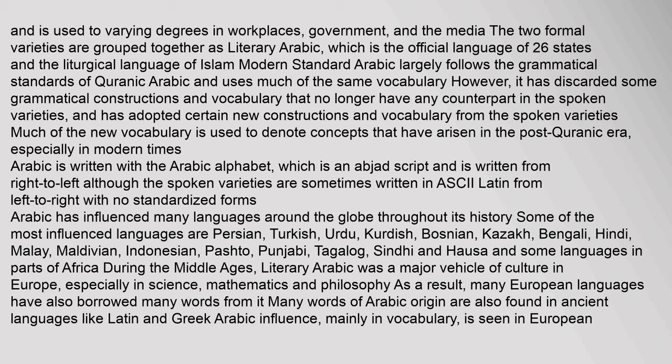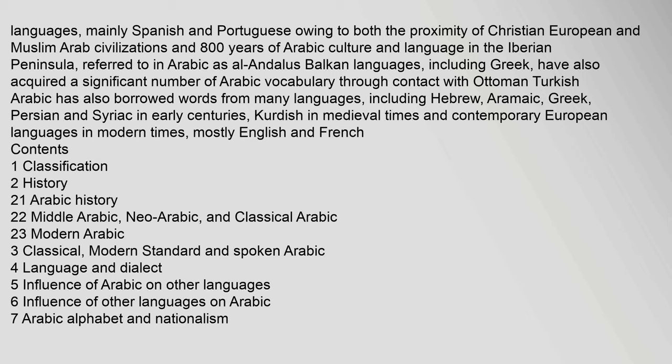During the Middle Ages, Literary Arabic was a major vehicle of culture in Europe, especially in science, mathematics and philosophy. As a result, many European languages have also borrowed many words from it. Many words of Arabic origin are also found in ancient languages like Latin and Greek. Arabic influence, mainly in vocabulary, is seen in European languages, mainly Spanish and Portuguese, owing to both the proximity of Christian European and Muslim Arab civilizations and 800 years of Arabic culture and language in the Iberian Peninsula, referred to in Arabic as Al-Andalus. Balkan languages, including Greek, have also acquired a significant number of Arabic vocabulary through contact with Ottoman Turkish.